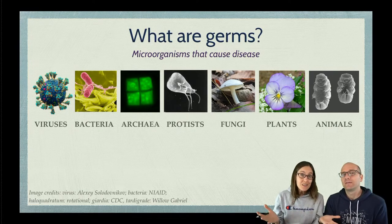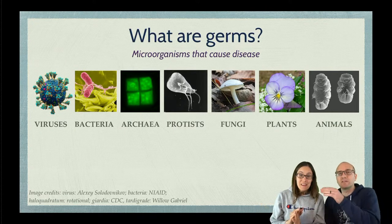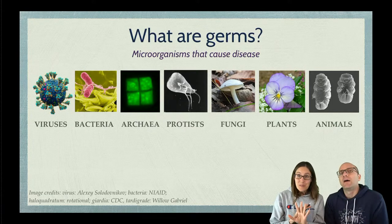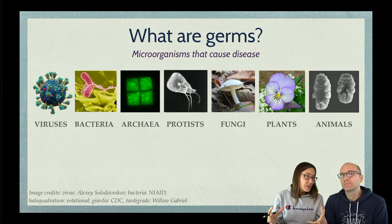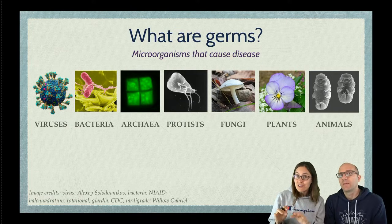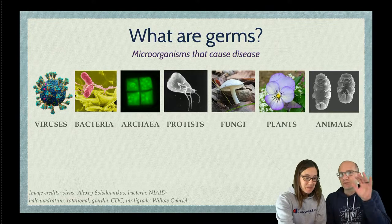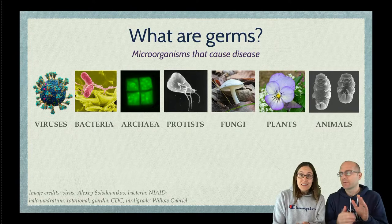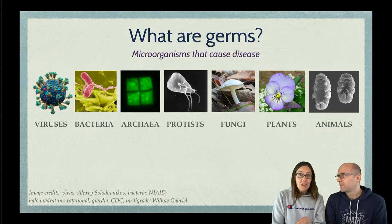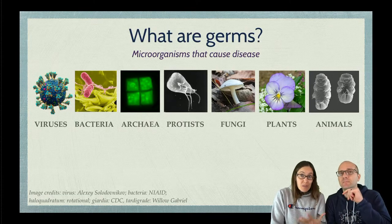Which of these could be germs? These are all those different domains of life we talked about — we've categorized everything from viruses up to animals. Germ is just another name for a pathogen. A pathogen is a microorganism that causes a disease; it can cause an infection and cause problems with how the body works.